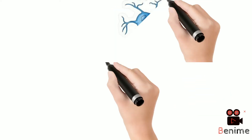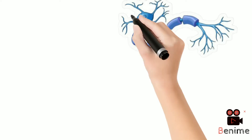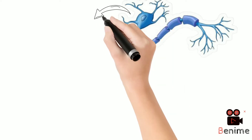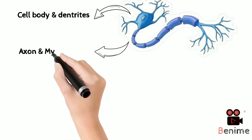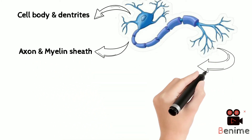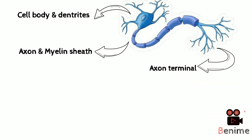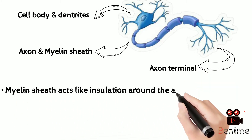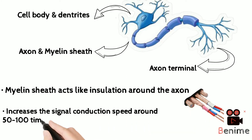The neuron forms the structural and functional unit of our nervous system, and its primary function is to transfer information in the form of electrical signals. It consists of a cell body and dendrites, axon and myelin sheath, and axon terminal. The role of the myelin sheath around the axon is like insulation around an electrical wire that prevents attenuation and increases conduction speed.